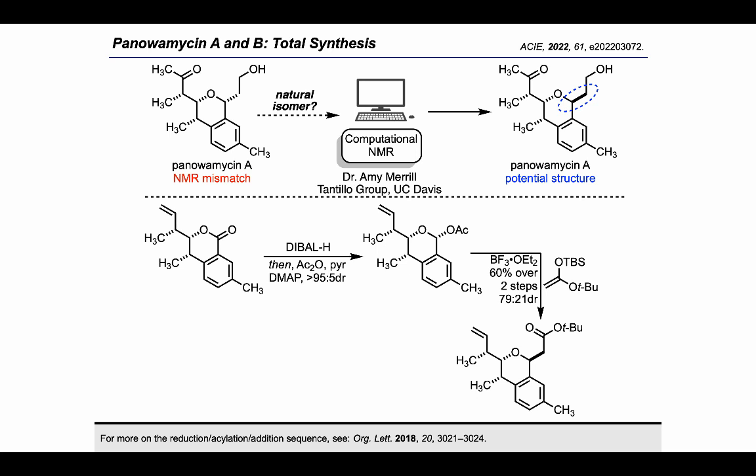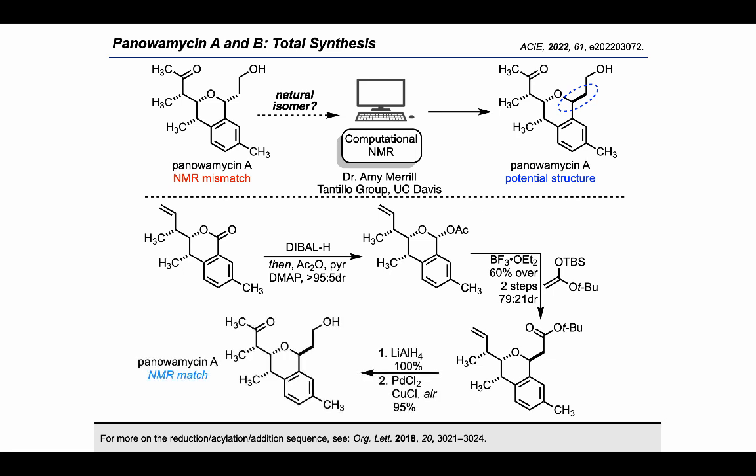As such, the isochromanone intermediate generated in the first iteration of the Wacker route was used in a divergent sequence to produce the desired stereochemistry at the benzylic position. In a sequence inspired by Scott Rychnovsky's work, this was accomplished by reducing the lactone with DIBAL and acetylating the resultant hydroxyl in situ. This acetal was then subjected to BF3·etherate and a silyl ketene acetal nucleophile, allowing for the diastereoselective addition of the nucleophile to the oxocarbenium ion from the least-hindered side. This produced the desired isomer at that key benzylic position. The ester was reduced and the terminal olefin was oxidized to the methyl ketone. This synthesis was finally successful in producing a structure consistent with the NMR spectra for panolamycin A, and the structure of the natural product was reassigned. In this way, we completed the total synthesis of panolamycin A and panolamycin B in an asymmetric divergent pathway.